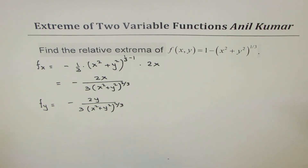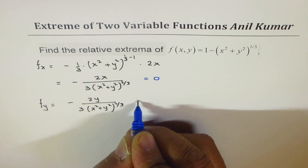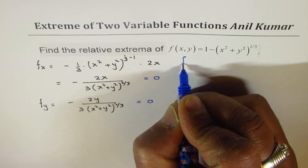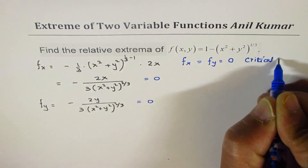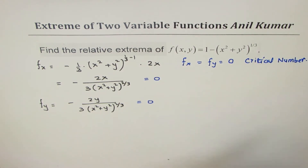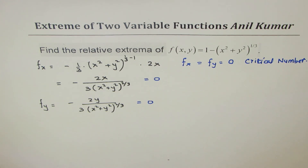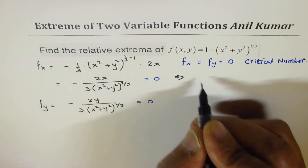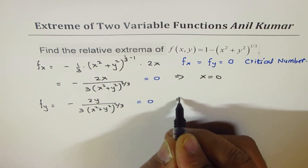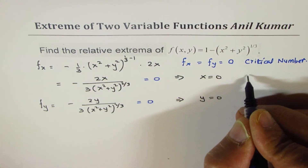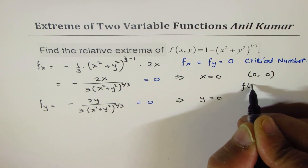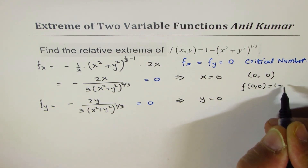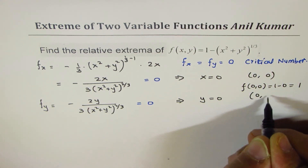To find critical numbers, we equate both partial derivatives to 0. This gives x = 0 and y = 0, so the critical number is (0, 0). Substituting into the function: f(0, 0) = 1 - 0 = 1, so the point is (0, 0, 1).